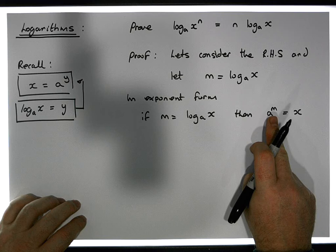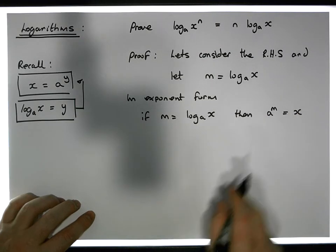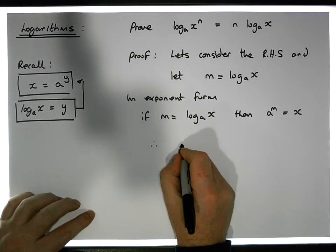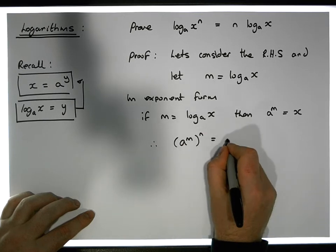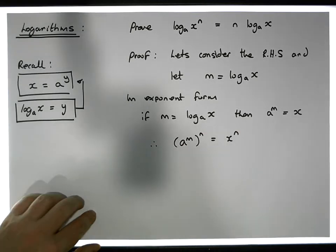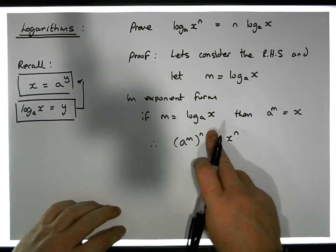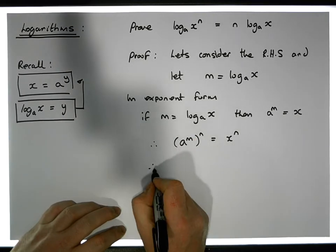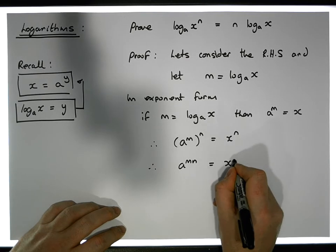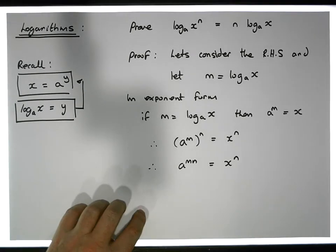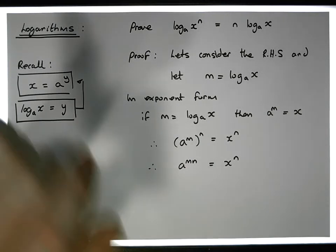If a to the power of m is equal to x, then if we raise both sides to the power of n, therefore a to the m raised to the power of n must equal x to the power of n. By the laws of exponents, this gives us a to the mn is equal to x to the n.